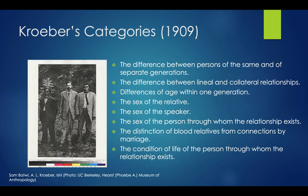We'll talk about Kroeber's categories. What Kroeber distinguished between were differences between persons of the same and separate generations, and the difference between lineal and collateral relationships. Lineal refers to ego versus father versus grandfather versus great-grandfather, while collateral is the difference between ego and a son versus ego and his brother. Differences of age within one generation are present in some kinship terminology cross-culturally, as are the sex of the relative and the sex of the speaker or ego, and the sex of the person through whom the relationship exists.